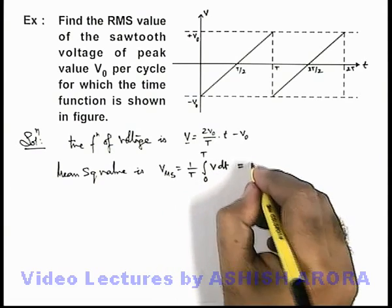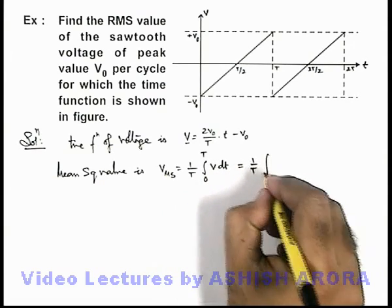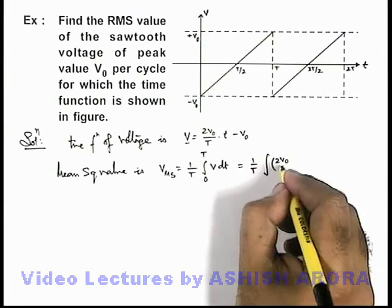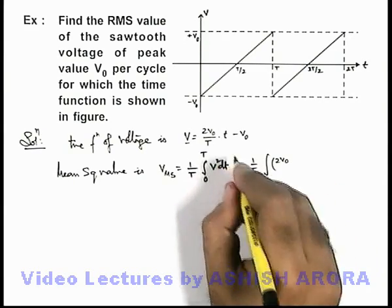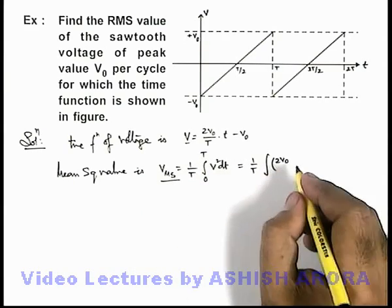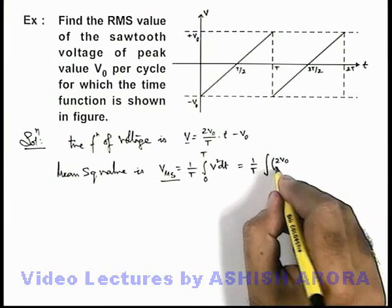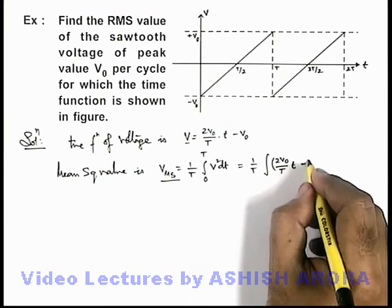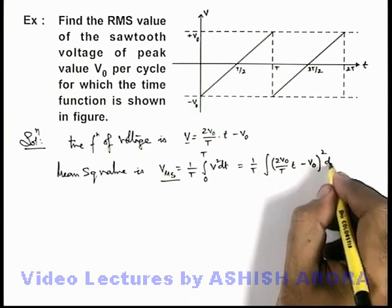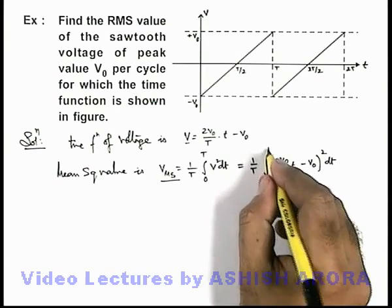If we substitute the value, this will be (1/T) integration of V². Since we are calculating the mean of square, this is (2V₀t/T - V₀)² dT, integrated from zero to T.